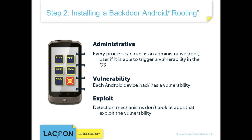The second step requires the installation of a backdoor to receive elevated privileges, also known as rooting, for Android devices. Today's rooting detection mechanisms do not place checks over apps that exploit an OS vulnerability. However, every process can run as an administrator user if it is able to trigger a vulnerability in the OS. Interestingly, every Android version up until now has displayed a vulnerability.